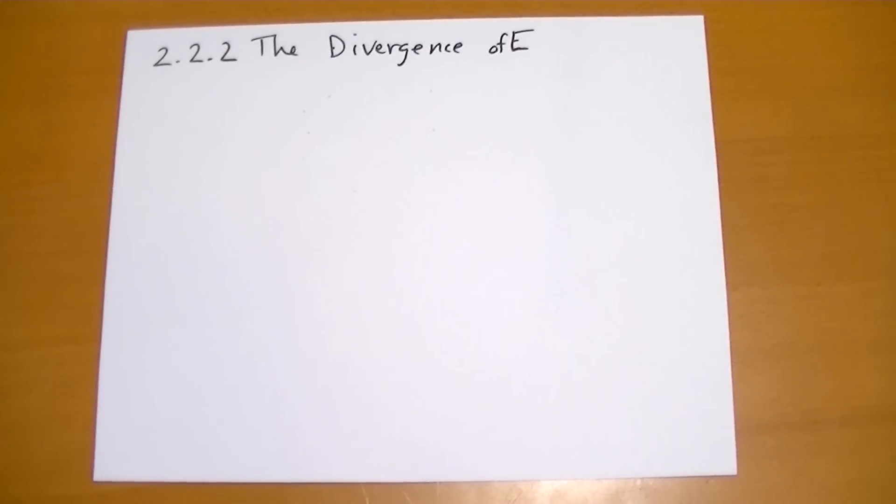Section 2.2.2, the divergence of E. We're going to derive Gauss's law not geometrically but just relying on some basic properties of the electric field.